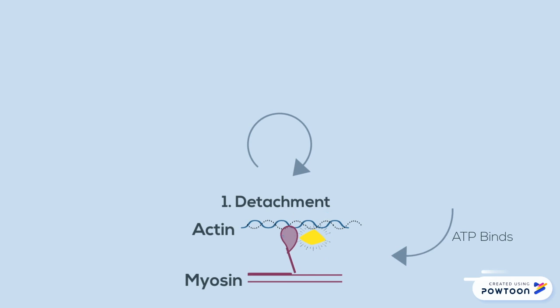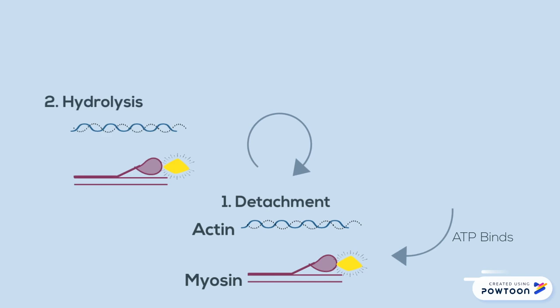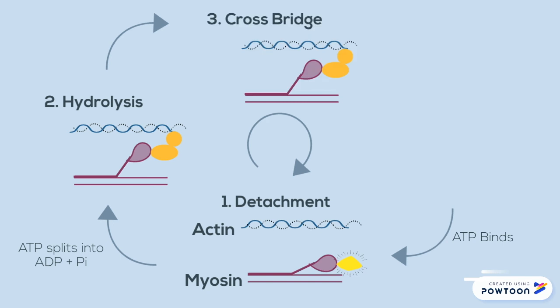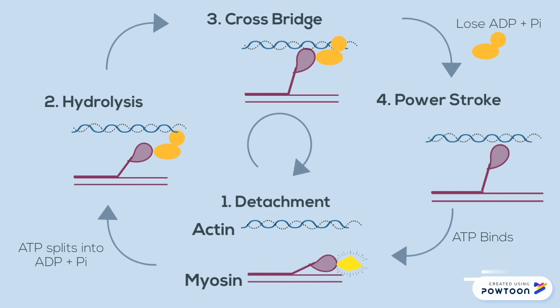Let's sum this up. Beginning with detachment, ATP binds to the myosin head, causing it to detach. Next, during hydrolysis, the ATP splits into ADP and a phosphate, which allows the myosin heads to be ready to bind. A crossbridge occurs because both the actin and myosin filaments are in the right positions to do so. And finally, the ADP and phosphate are then lost, causing myosin to perform a power stroke.